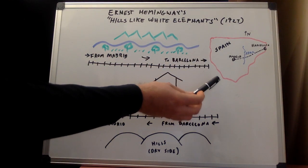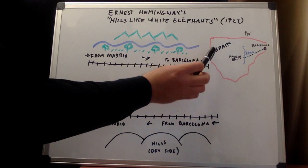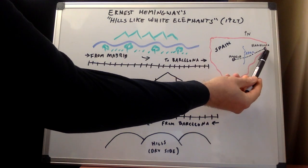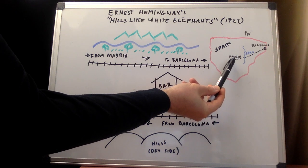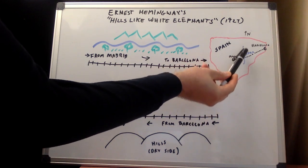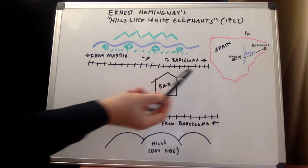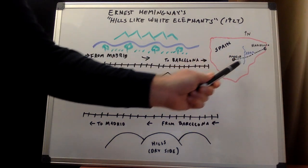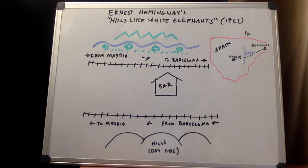The story takes place in Spain. Here's a map of Spain, and this is where the main action takes place. On the east coast of Spain is Barcelona. In the middle part of Spain is Madrid. Running between them is the River Ebro, which is mentioned in the story. The characters are on a train moving from Barcelona to Madrid, and they've stopped at a train station and are having some drinks at a bar next to the Ebro.